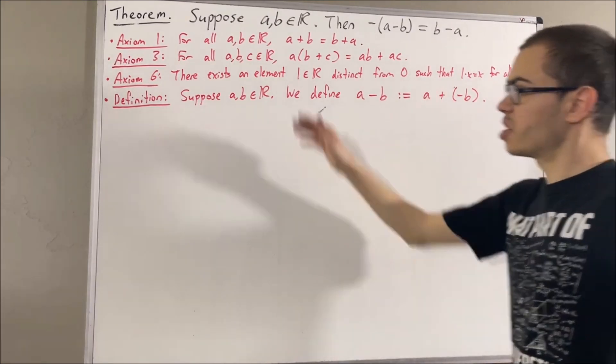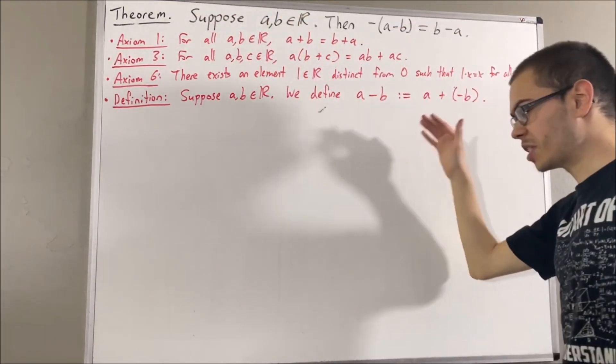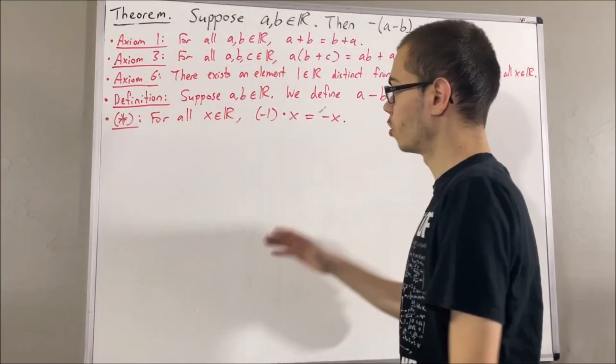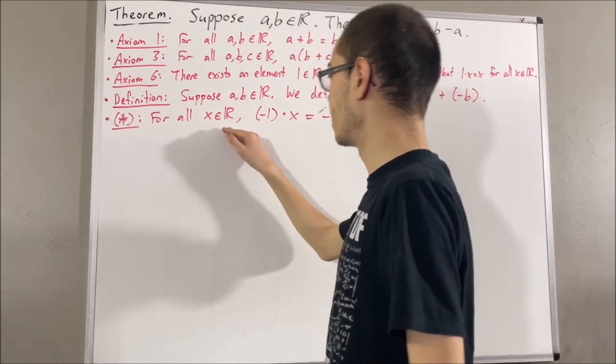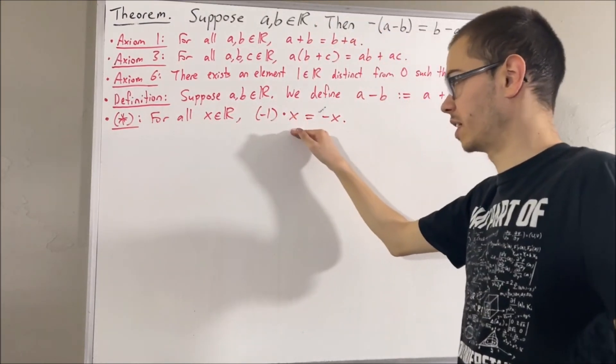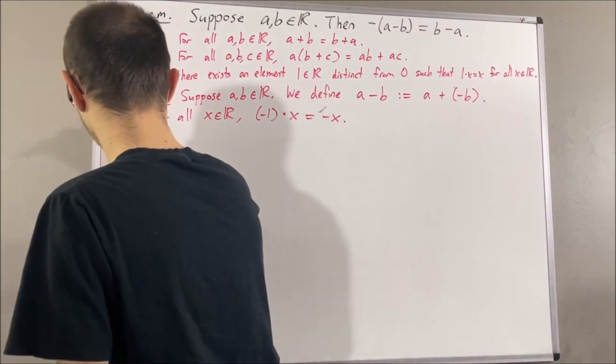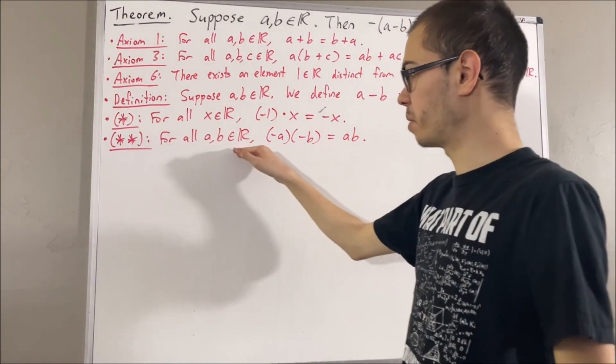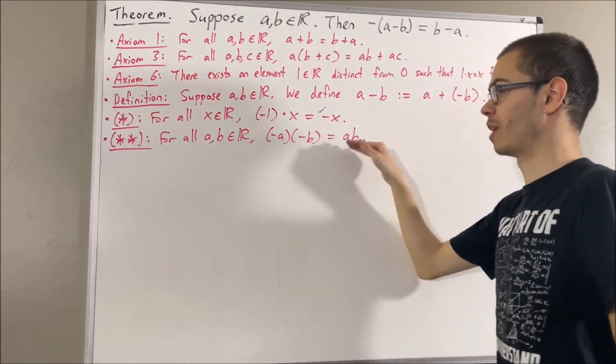And next, in proving this theorem, we are going to be using some preliminary results which we have proven. We have proven for all real numbers x, negative 1 times x is equal to negative x. We have also proven for all real numbers a and b, negative a times negative b is equal to ab.